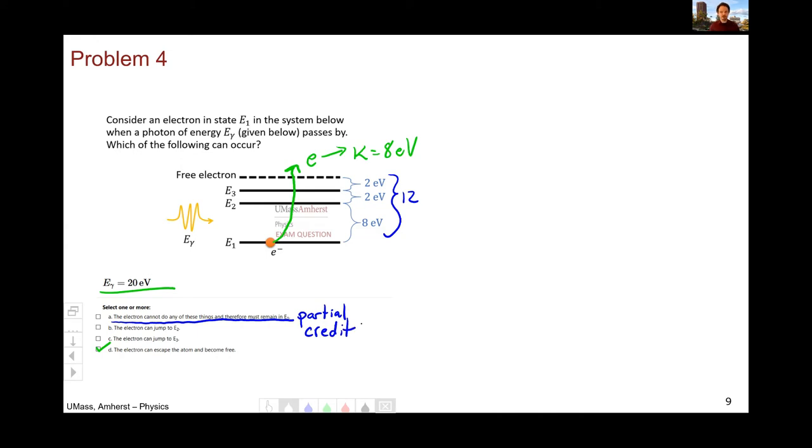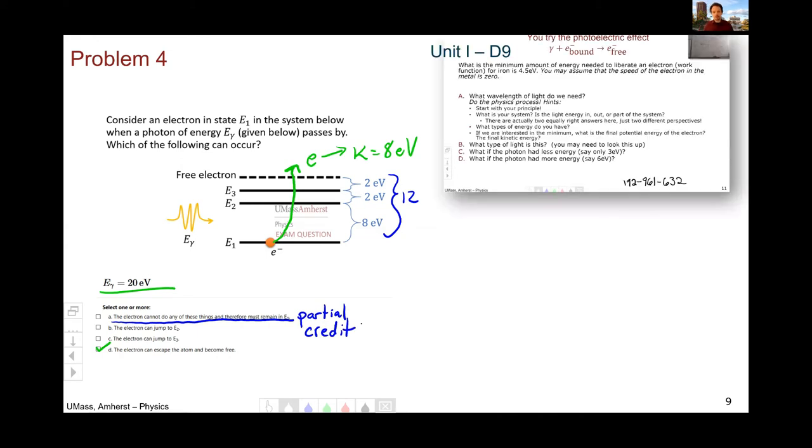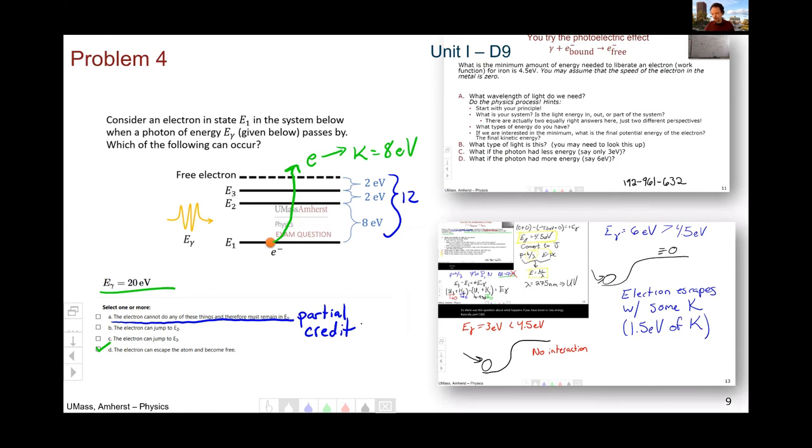What would have been good preparation for this? The photoelectric effect problem on unit 1, day 9, slide 11, in particular part D, where if the photon had more than enough energy to escape, what would happen? And the answer was it would escape with some kinetic energy. So very, very similar to this problem in that regard.